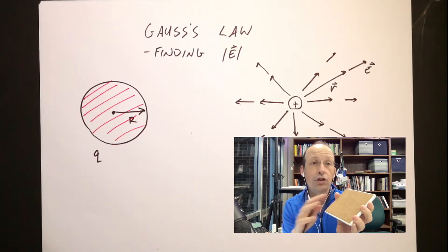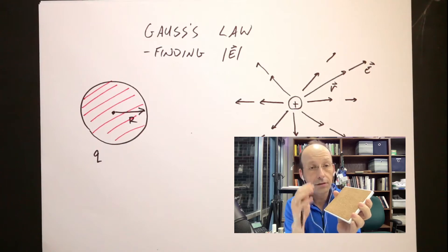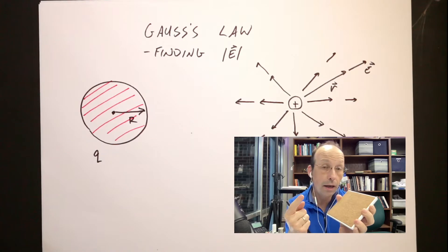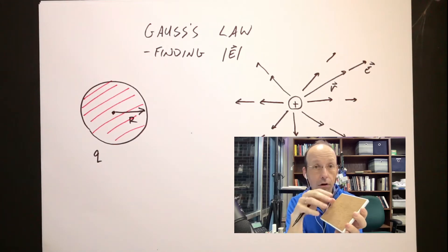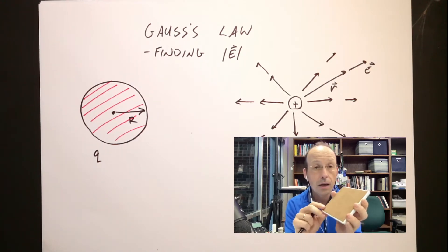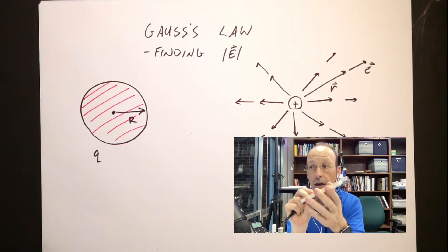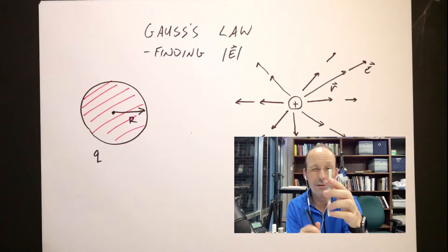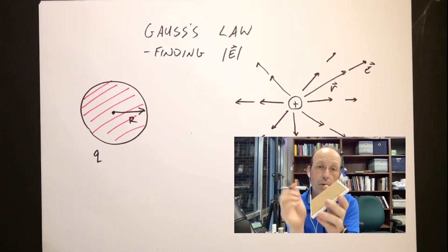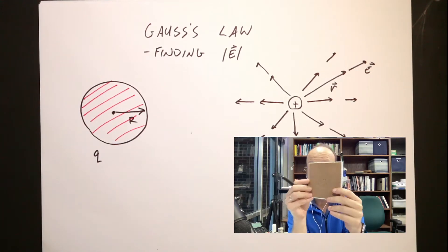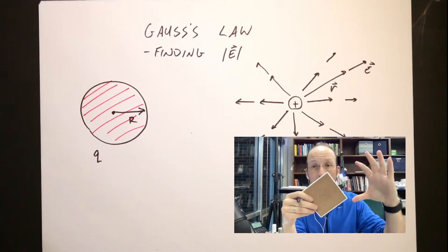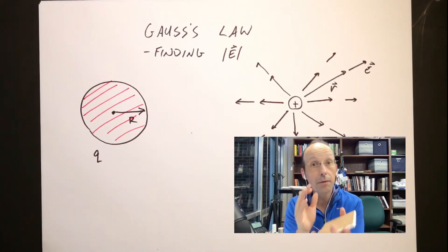I want to see what can change the amount of rain that hits the surface. Number one, I can make it rain harder — if it's raining faster and harder, more rain's going to hit this. Number two, I could change the angle. If I rotate it so the rain comes down perpendicular, it hits fully; if I turn it edge-on, the rain's going to miss it. And finally, if I make the area bigger, I could increase the rain. So that would be rain flux — it tells you how much rain hits this surface.